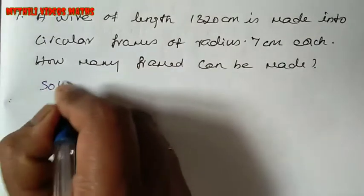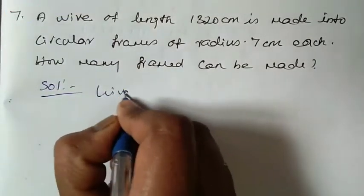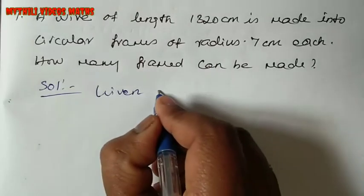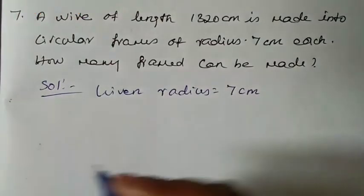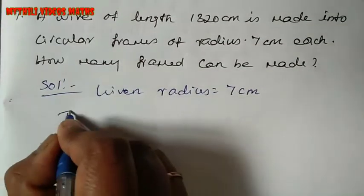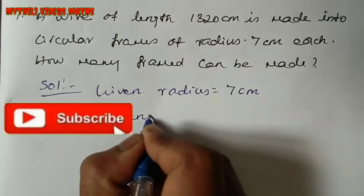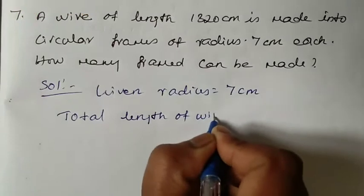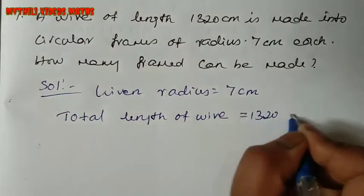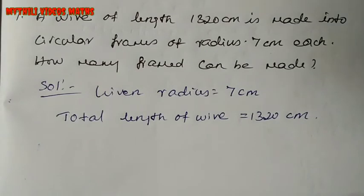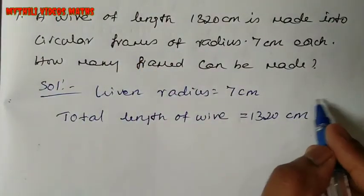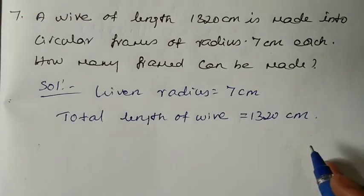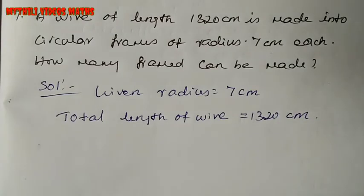What is given? Given: radius is equal to 7 cm. And total length of wire is equal to 1320 cm. We have to find the number of frames that can be made.